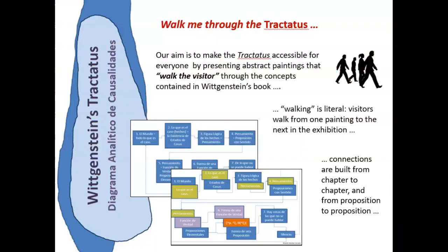The exhibition is an invitation to literally walk visitors through the Tractatus. Our aim is to make the Tractatus accessible for everyone by presenting abstract paintings that walk visitors through the concepts contained in Wittgenstein's book. Walking is literal, because visitors will walk from one painting to the next throughout the exhibition, with connections built from chapter to chapter and from proposition to proposition, while also exploring key elements of Wittgenstein's very interesting life.